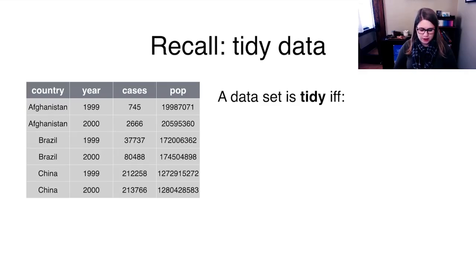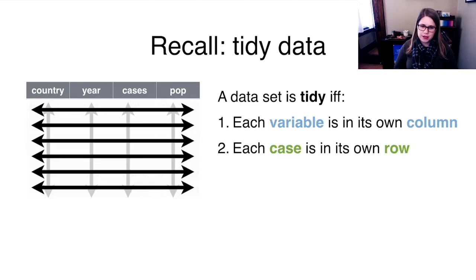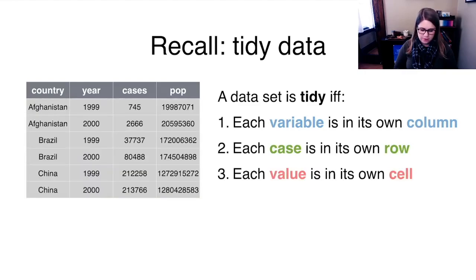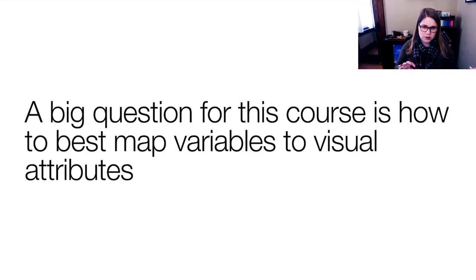Remember, we were talking about tidy data, where it needs to have every variable in its own column, every case in its own row, and every value in its own cell. I add this fourth rule that every row needs to be the same sort of thing. So if we have tidy data, the practice of data visualization is turning variables from that tidy data set and mapping them to visual attributes — things that are on paper or on the screen.